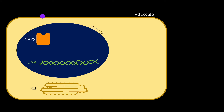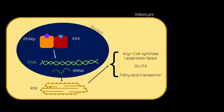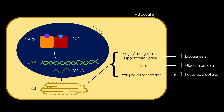TZDs bind to peroxisome proliferator activated receptor deltas in adipose tissue cell nuclei. Simultaneously, retinoic acid binds to the retinoic acid receptor also in adipose cell nuclei. These two ligand-receptor complexes dimerise and activate the transcription of acyl-CoA synthase and lipoprotein lipase, glucose transporter 4 and fatty acid transporters, which increase lipogenesis, glucose uptake and fatty acid uptake respectively, all reducing blood glucose concentrations.